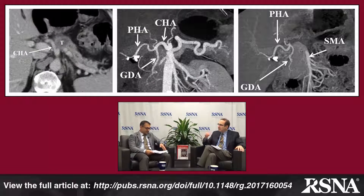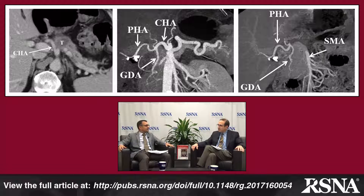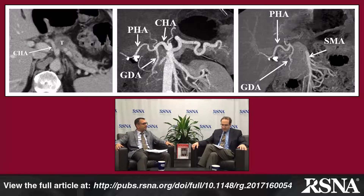In this case, the tumor is seen abutting the common hepatic artery. The preoperative maximum intensity projection image shows an uninvolved gastroduodenal artery, and the postoperative image shows successful resection with liver perfusion maintained by the gastroduodenal artery, supplied via the superior mesenteric artery and pancreaticoduodenal artery as a collateral.